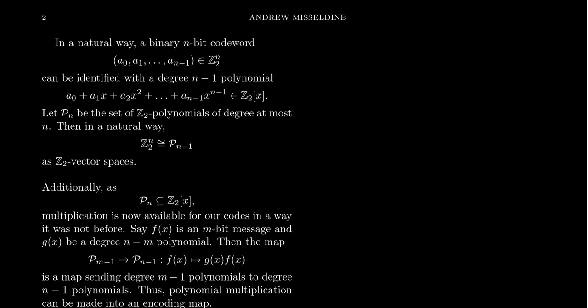And in this situation with coding theory, we'll assume the coefficients are coming from Z2. So because of that, it's a very common thing to prove in linear algebra that the set of polynomials whose degree is at most n minus 1 is isomorphic to the vector space Z2^n. And be clear, this is an isomorphism of vector spaces.